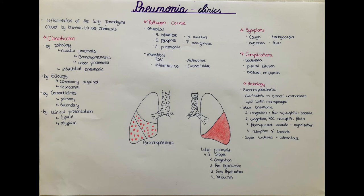Klebsiella pneumoniae is the most frequent gram-negative pathogen and most often occurs in malnourished patients, especially chronic alcoholics. Klebsiella often produces a viscous capsular polysaccharide leading to thick and gelatinous sputum, which is one of the characteristic clinical symptoms of Klebsiella pneumonia.